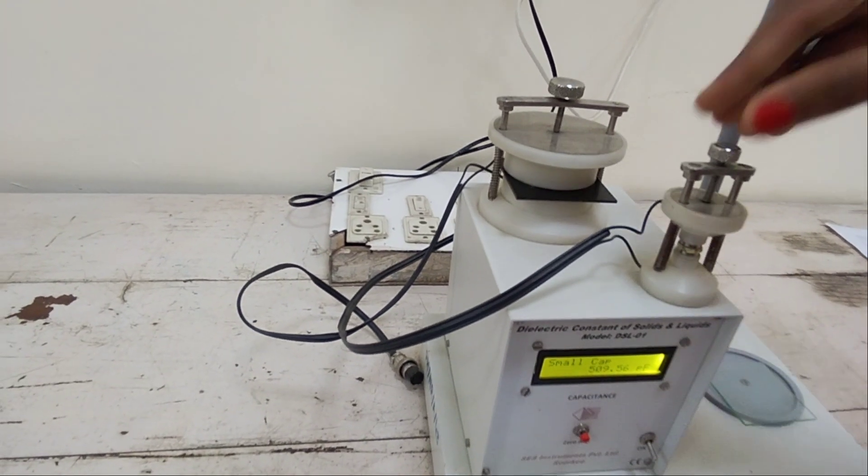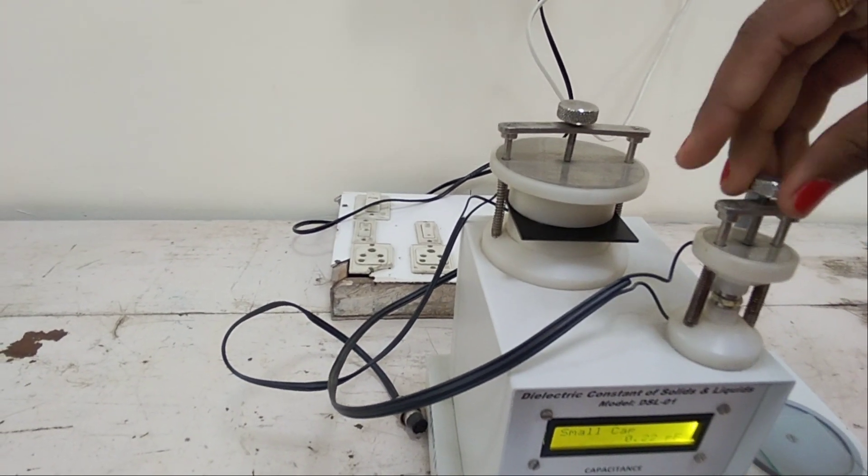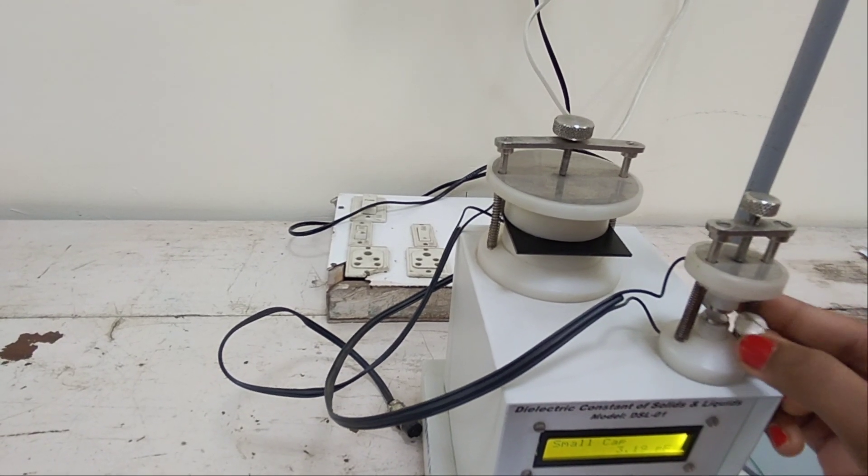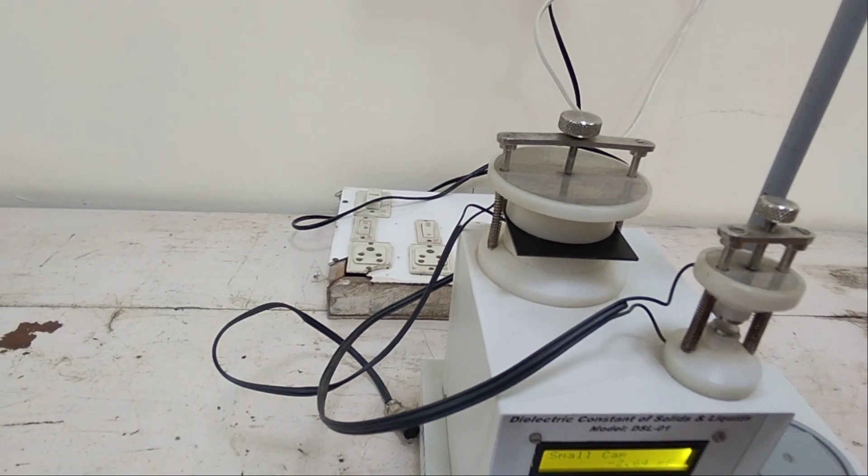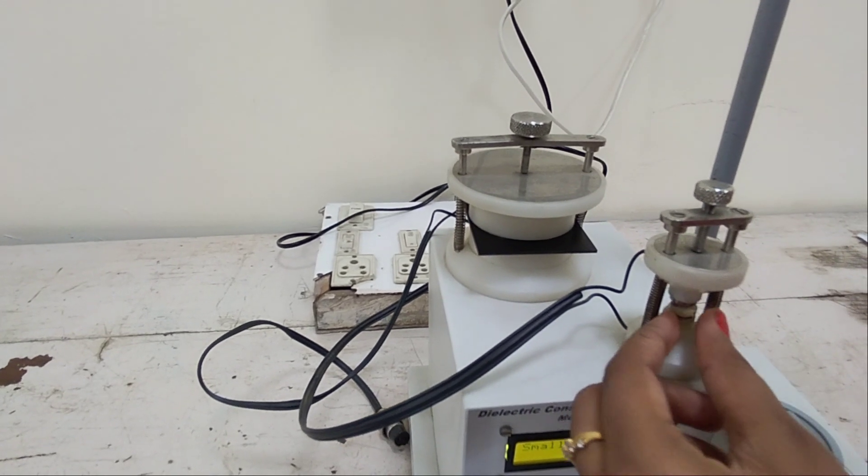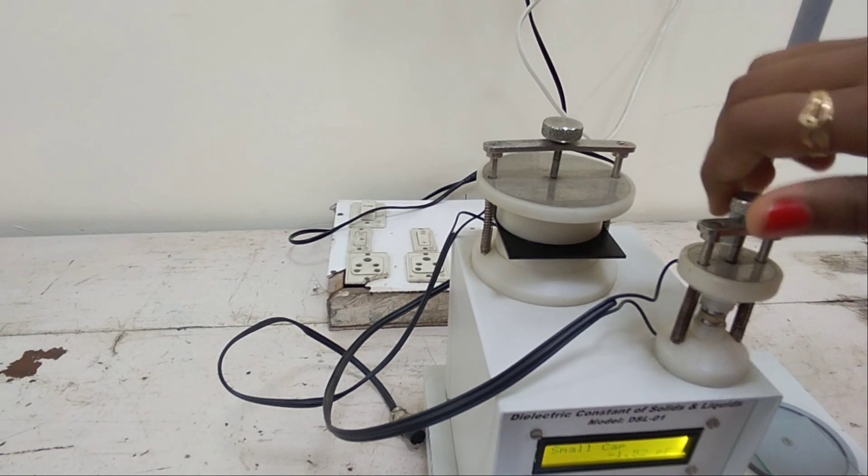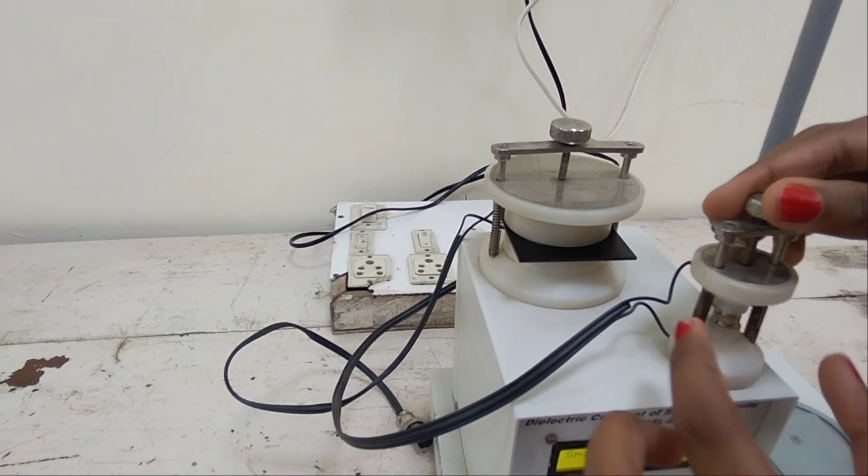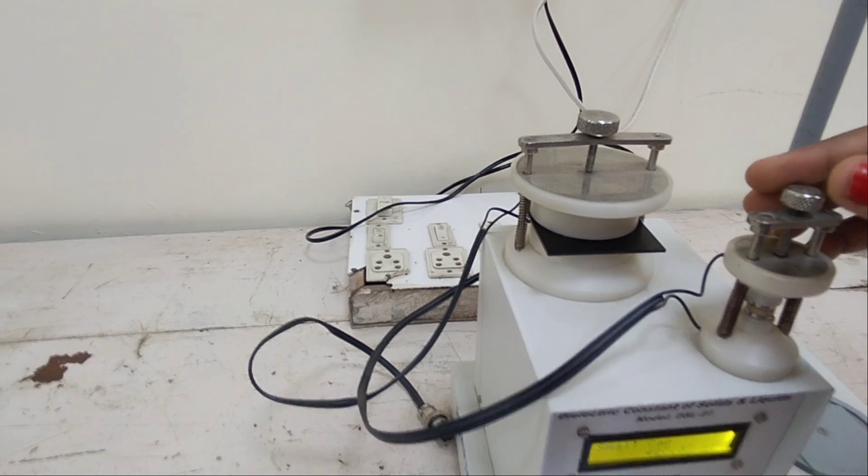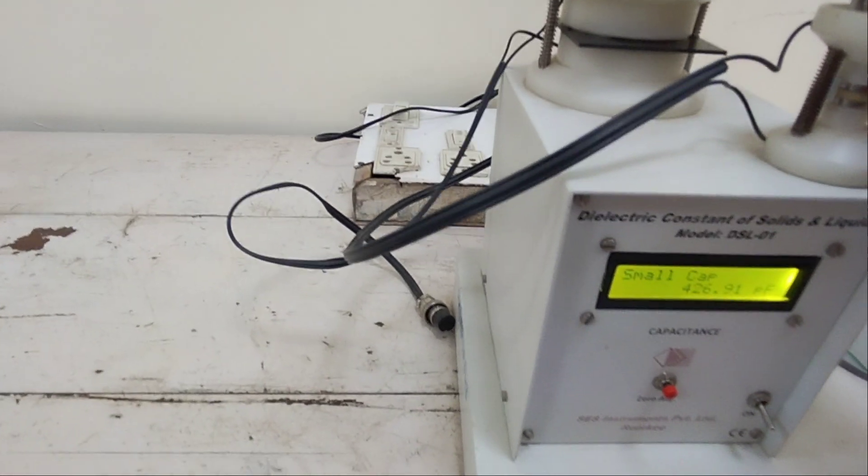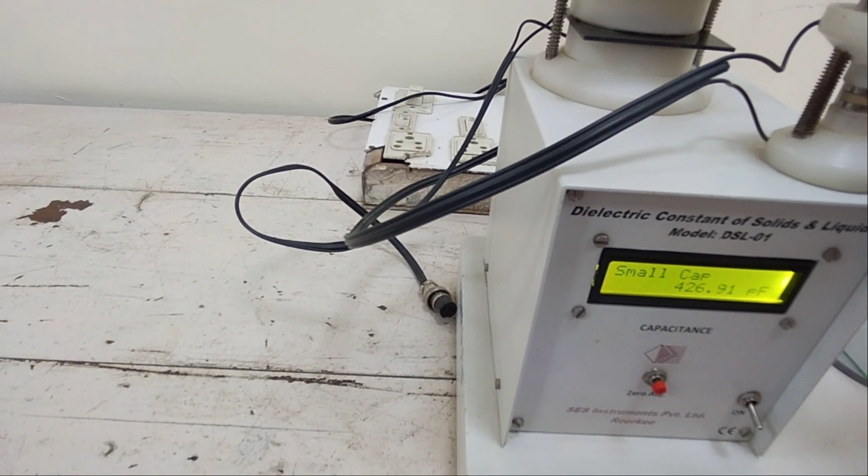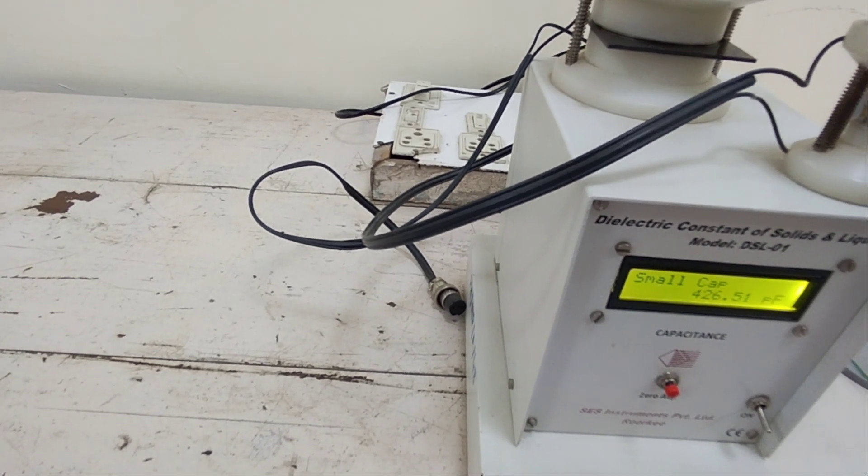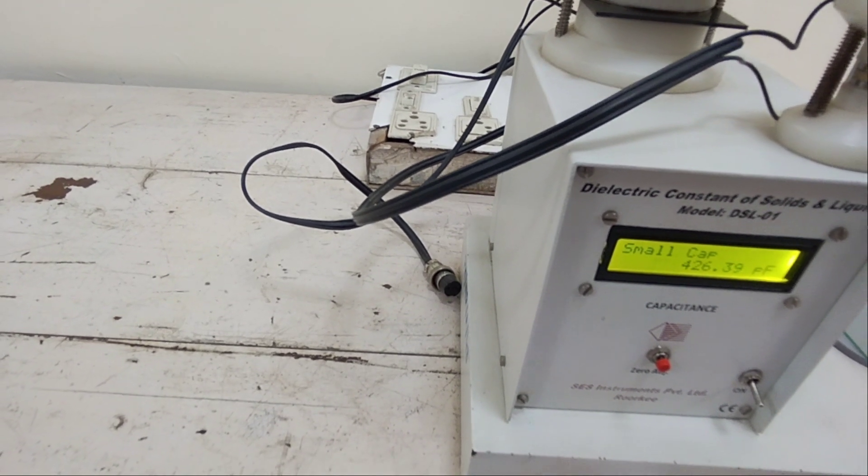Next we have to put our sample PZT which is lead zirconate titanate. Open it anticlockwise, then take out this sample and insert the new sample which is PZT. Again rotate the knob clockwise. You can see the capacitance is 426.7 or 426.5. So you have to note down it. This is all your experiment.